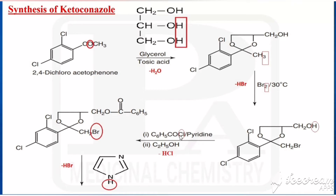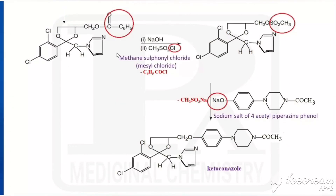We are treating with benzoyl chloride in the presence of pyridine and ethanol. This is an acid chloride, so by the removal of HCl, we are getting an ester — CH2O is added with CO and C6H5. Then with this ester, we are treating imidazole, which is a 5-membered heterocyclic ring having 2 nitrogens at positions 1 and 3. The H combines with Br and is removed as HBr, so the imidazole ring gets attached with the CH2.